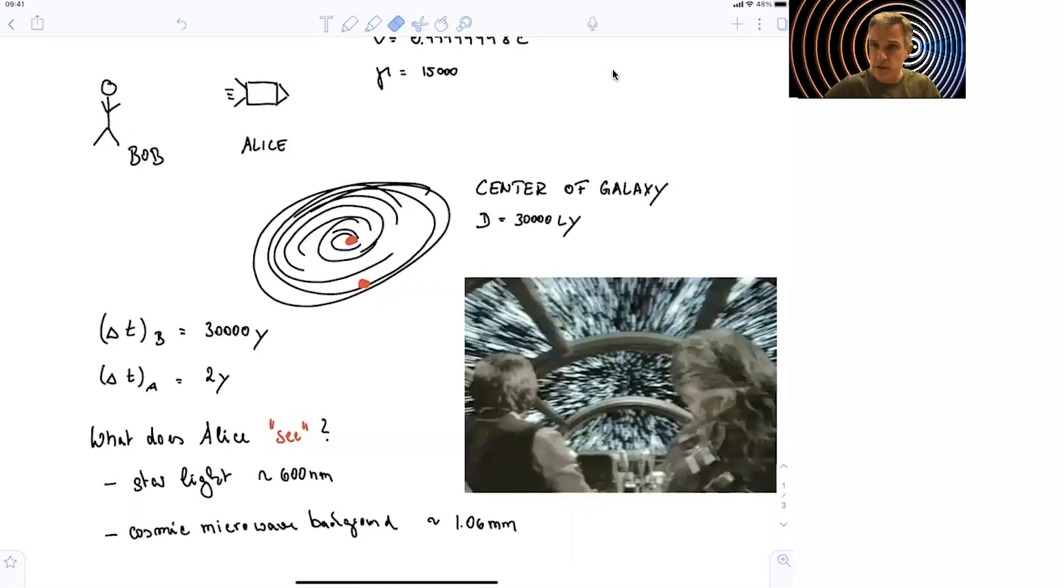Or is the situation somehow different? The starlight has a wavelength of about 600 nanometers, and the cosmic microwave background a wavelength of 1.06 millimeters. So how is Alice going to observe those two light sources in her travel?